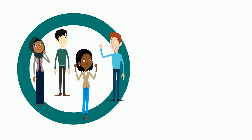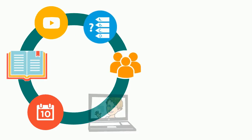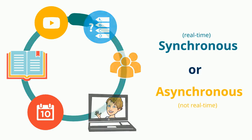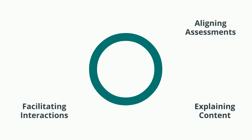Successful learning in an online class also depends on your careful decisions about how to organize the class and guide students through the content, assessments, and interactions using synchronous and, more importantly, asynchronous activities. As the instructor, you make these decisions in four areas of course design: explaining content, aligning assessments with learning goals, facilitating interactions between class members, and organizing your course to support remote learning.